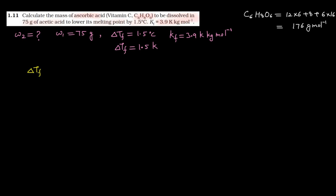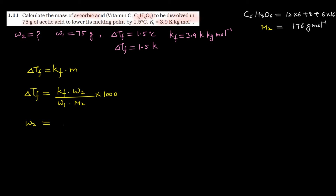अब यहाँ पर formula लगाते हैं। Delta Tf equals to Kf into M, where M is the molality। इसको simplify करते हैं: delta Tf equals to Kf into W2 divided by W1 into M2 into 1000। यहाँ पर M2 निकाला था, निकालना W2 है। So W2 will be equals to delta Tf into W1 into M2 divided by Kf into 1000।